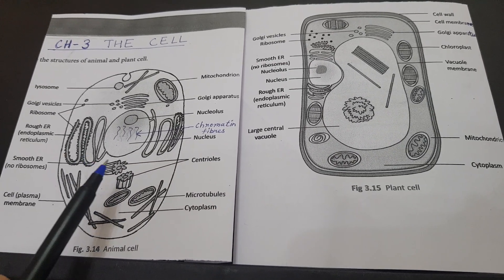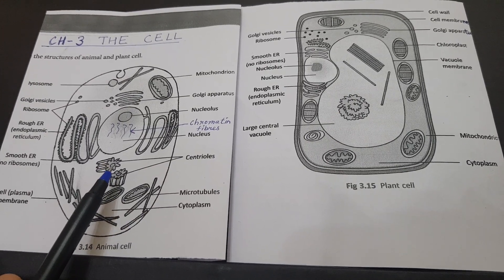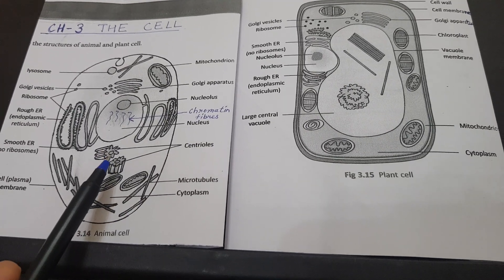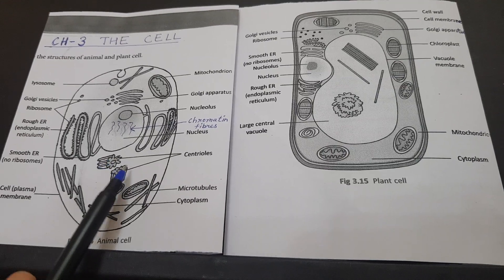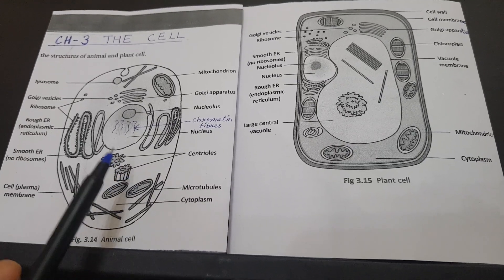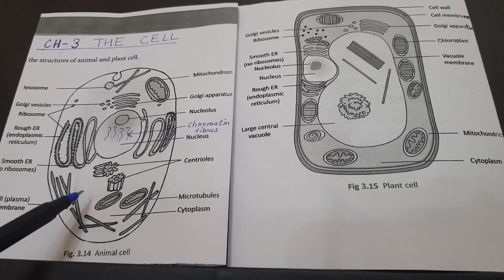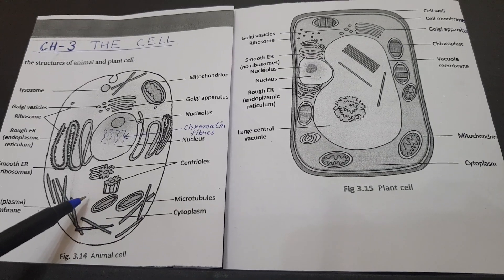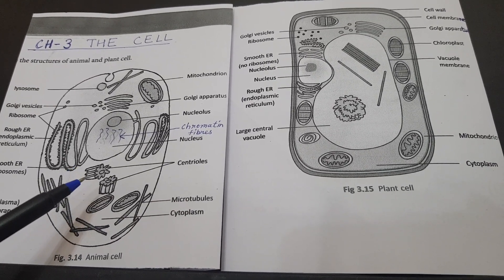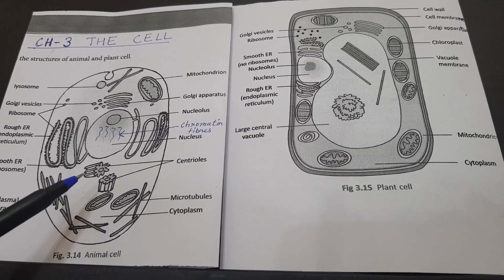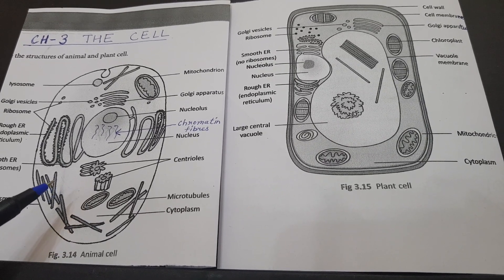Next we have the centrosome. The centrosome consists of two minute granules called centrioles. Centrioles are present only in the animal cell, and they help in cell division in animal cells.